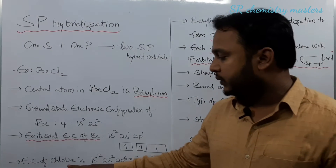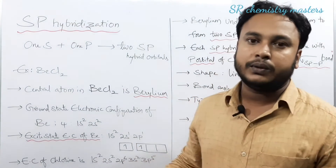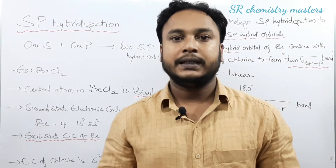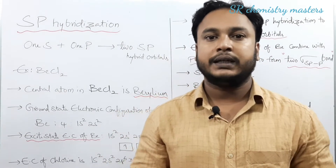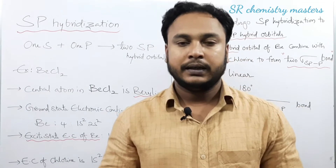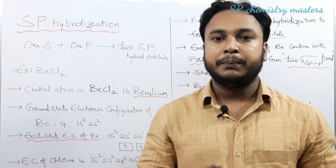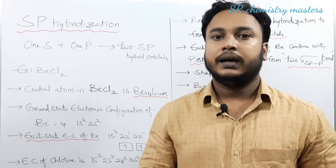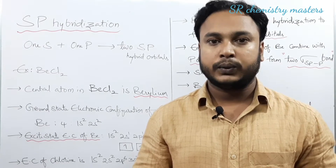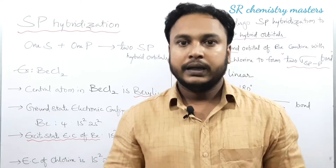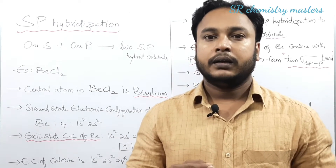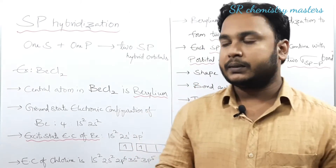The electronic configuration of chlorine: chlorine has atomic number 17, and the outer shell electronic configuration is 3s²3p⁵. One unpaired electron is present in chlorine, and chlorine requires one electron to get stabilized. In order to attain stability, chlorine forms a bond with beryllium.